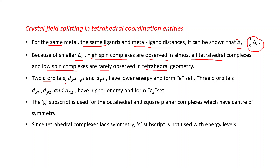Two d-orbitals — dx²-y² and dz² — have lower energy and form the E set. Three d-orbitals — dxy, dyz, and dxz — have higher energy and form the t₂ set. The 'g' subscript is used for octahedral and square planar complexes which have a center of symmetry. Since tetrahedral complexes lack this symmetry, the g subscript is not used with energy levels.